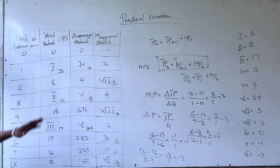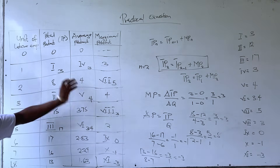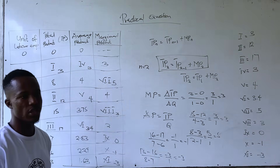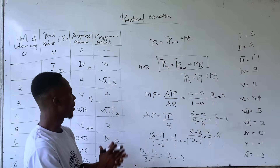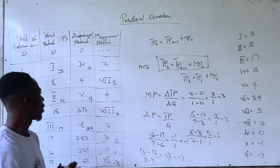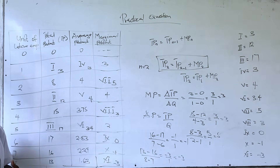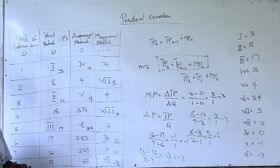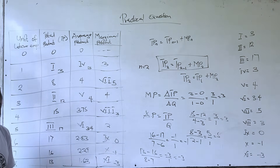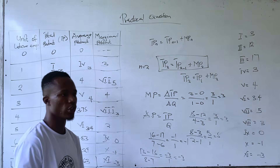We are done with the table. This is how to calculate total product, average product, and marginal product when you get a question under production theory. Thank you very much for joining us today.